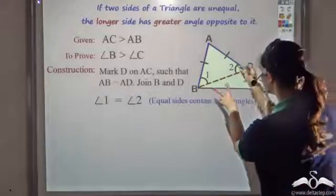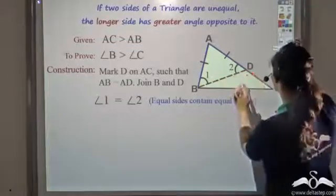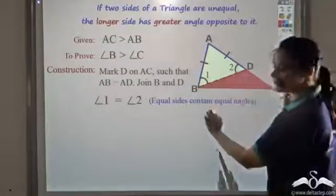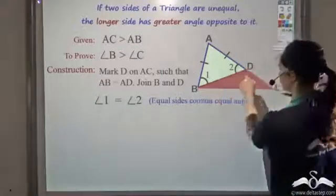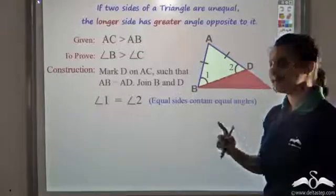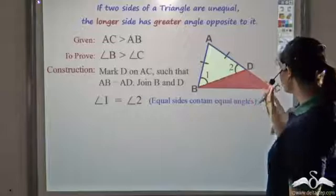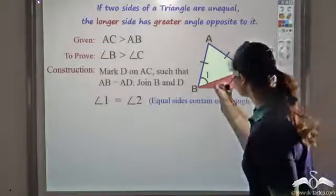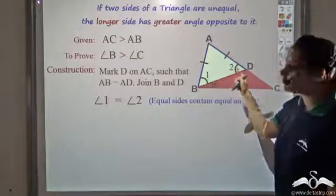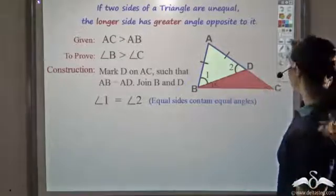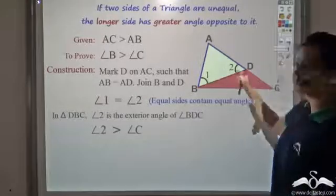Now, isn't angle 2 an exterior angle to triangle BDC? So I have triangle BDC, and angle 2 is an exterior angle of triangle BDC. We know that an exterior angle equals the sum of the two interior opposite angles. So angle 2 equals angle C plus angle X, which means angle 2 is greater than angle C.